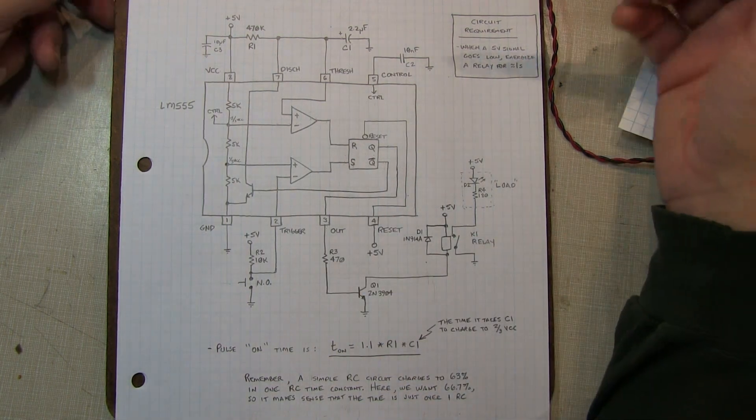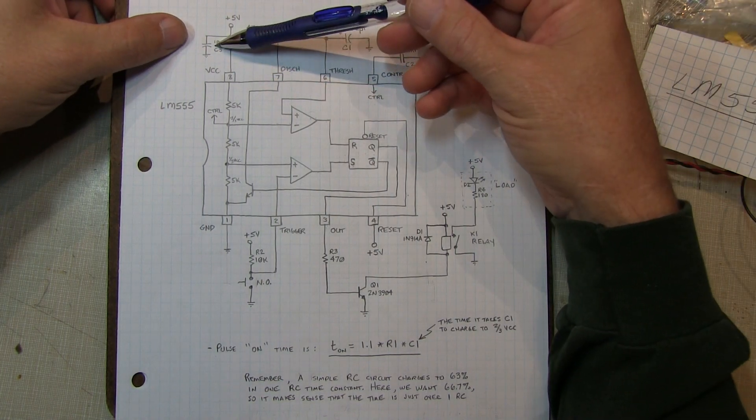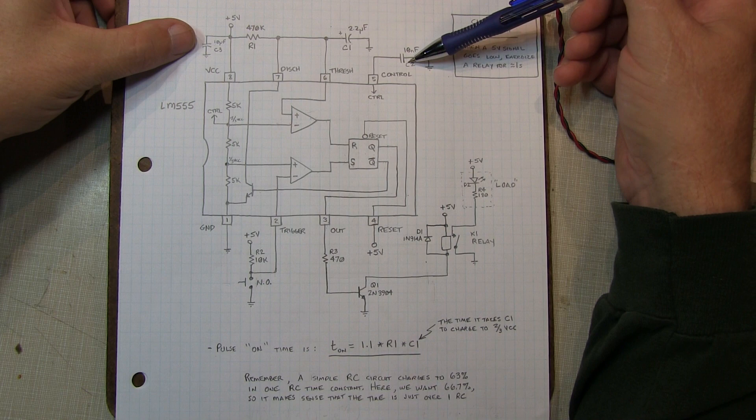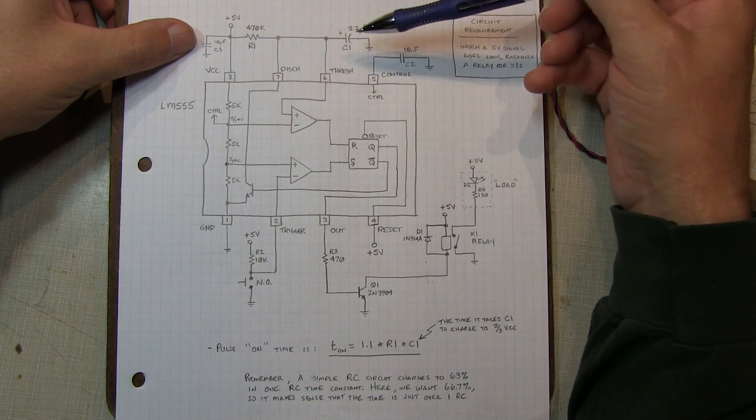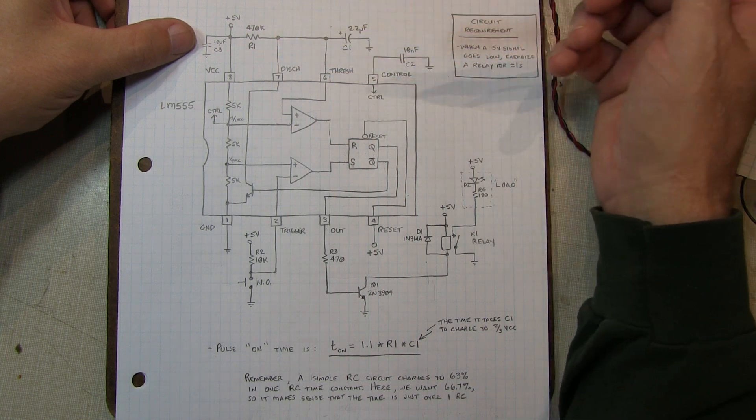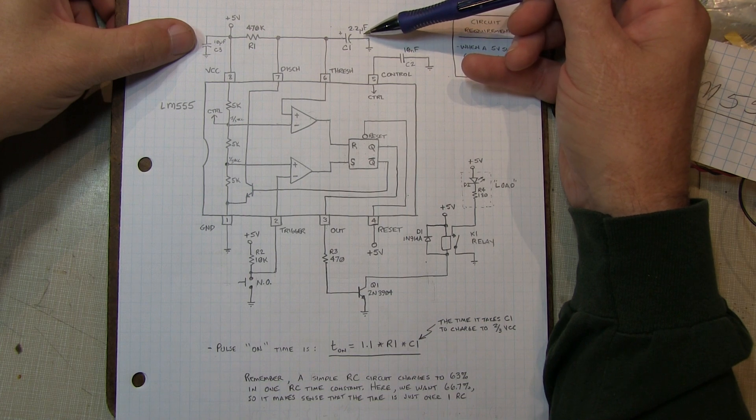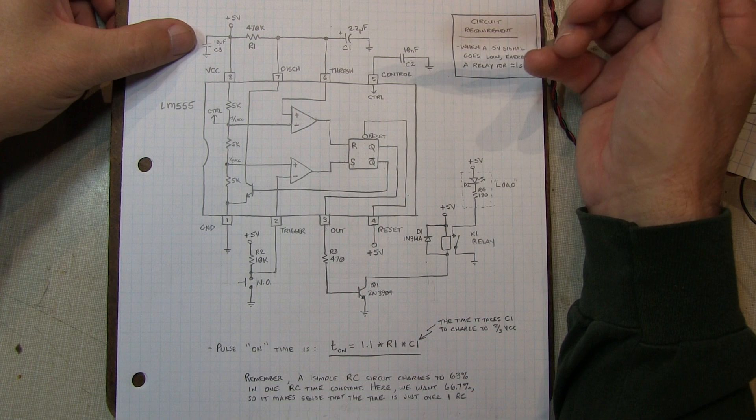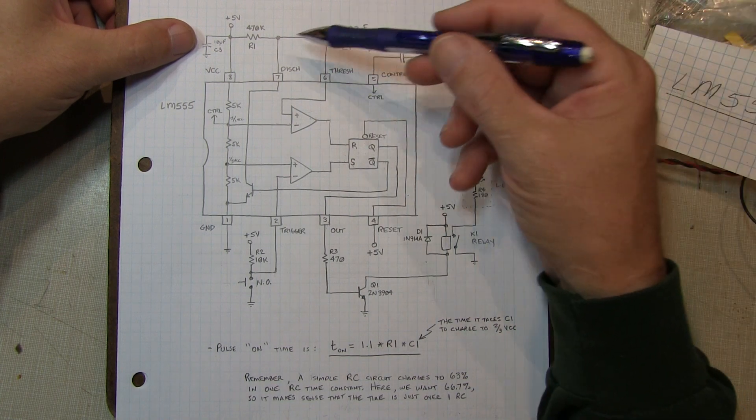In terms of component selections, not really critical at all on the decoupling cap on the control pin or VCC. We just want the product of R and C times 1.1 to equal our pulse width. So that's why we chose those. And generally, I try to stay away from really large value of capacitors because they tend to be leaky and unstable. So this is a reasonable compromise.